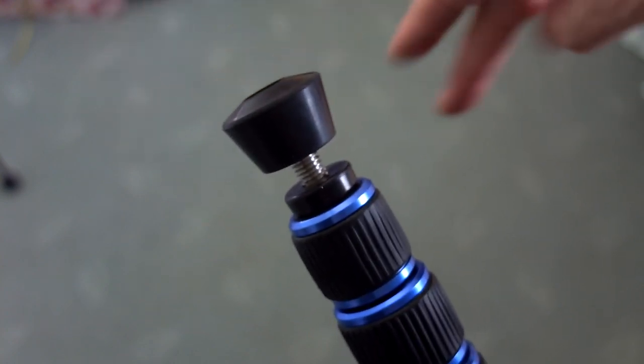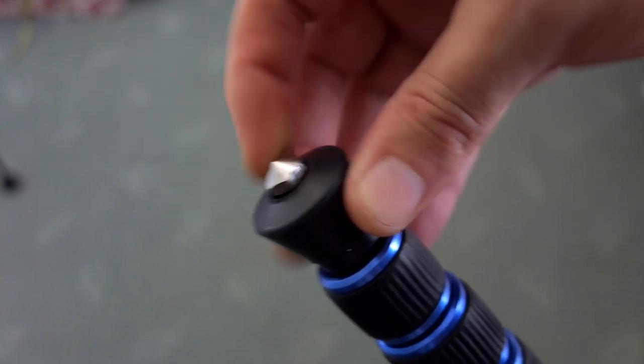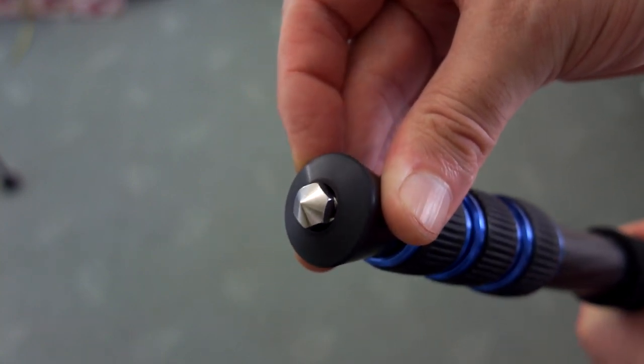On the feet you'll see a special mechanism. If you unscrew it, it makes it flat and it conceals the spikes. They're not sharp spikes, but they provide some grip in uneven ground. When you screw it down, they're exposed.